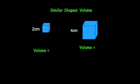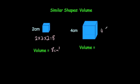Let's work out the volume for each of them. The volume of a cube is length times length times length, so it will be two times two times two, which is equal to eight centimeters cubed. For this one it's going to be four times four times four, which will be 64 centimeters cubed.